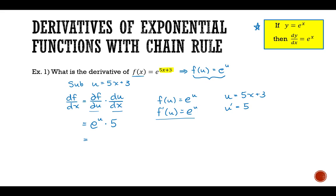Putting this all together, I get df/du — which is e^u — times du/dx, which is 5. Substituting our expression for u back in, this gives f'(x) = 5 times e to the power of 5x + 3.